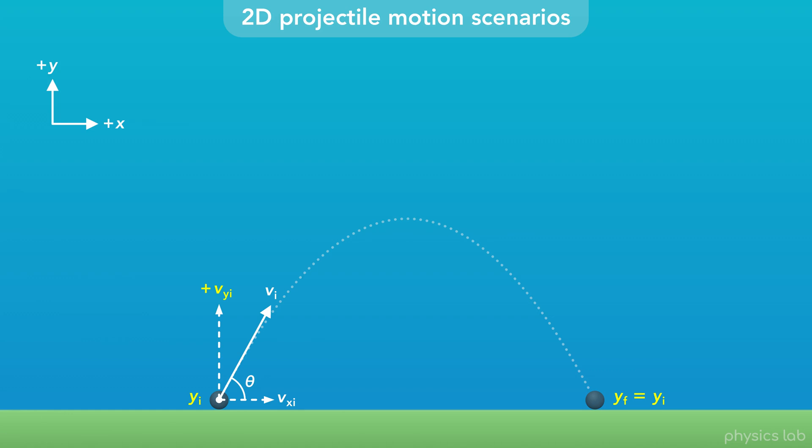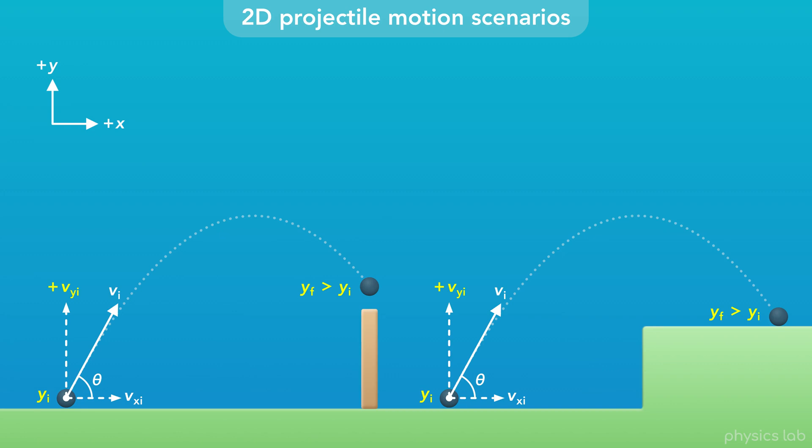The final height could be the same as the initial height, like if it starts and ends at the ground. The final height could be greater than the initial height, like if it's going over a wall or landing at a higher point.